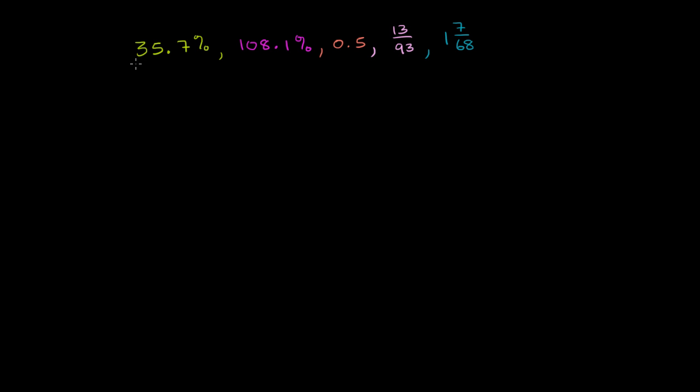Some of these are expressed as percentages, this one and this one over here. Some are pure decimals, and some are fractions. This fraction right here is a proper fraction, and this is a mixed number. There's a bunch of ways you can order it. You could get an intuitive sense of roughly how large this is, or you could put it all in the exact same format and then compare directly. At least for me, the easiest format would be to put them all into a decimal format.